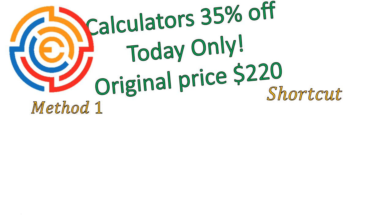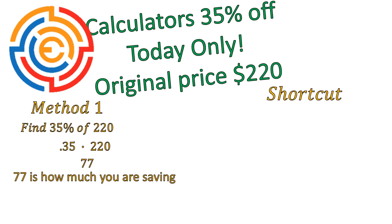Again, same question using both methods. You can see in method one, if I find that 35%, I convert 35% into a decimal — of means multiplication — so it becomes 0.35 times 220, which gives you 77. We have to remember, the price of the calculator is not $77. $77 is how much you are saving. It's 35% of $220. So now we have to take that $220, the original price, and subtract 77 to get our new amount. And that's a step that's often missed when using this method.